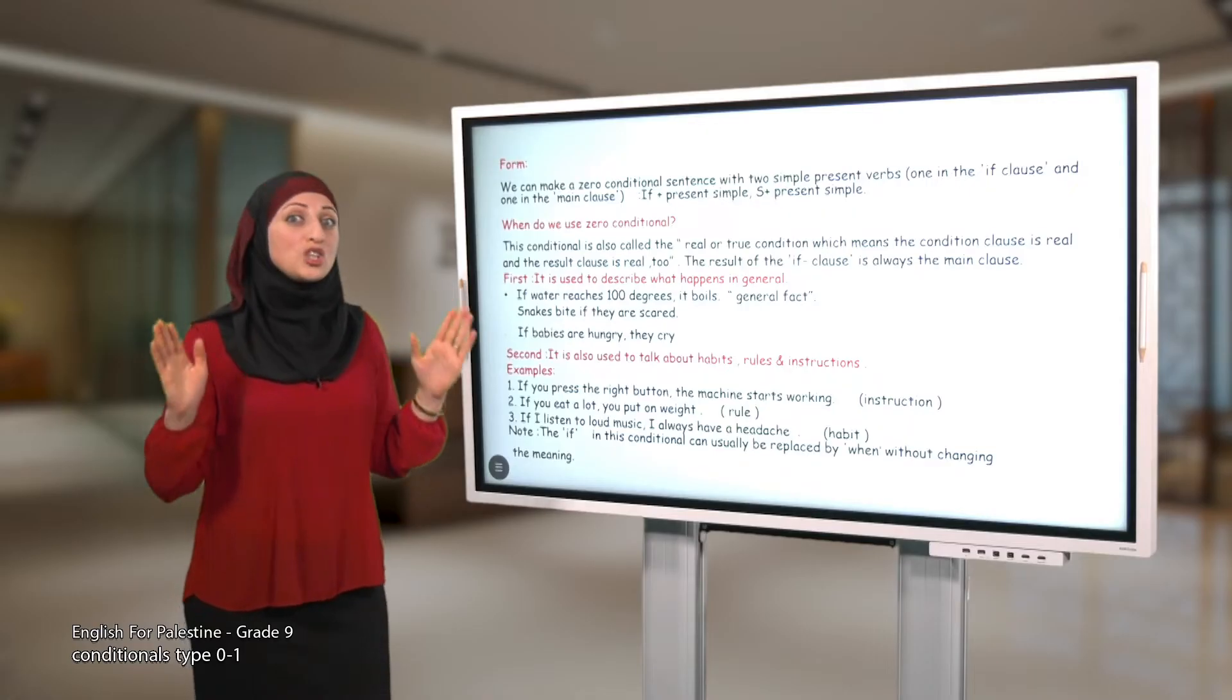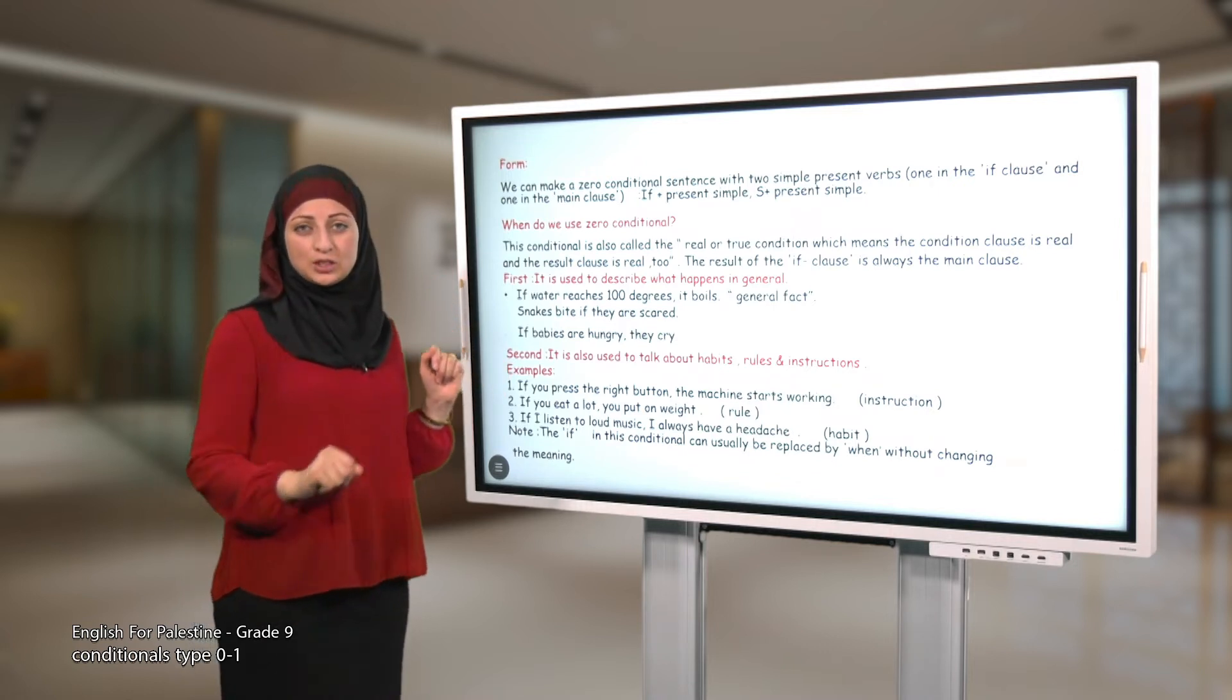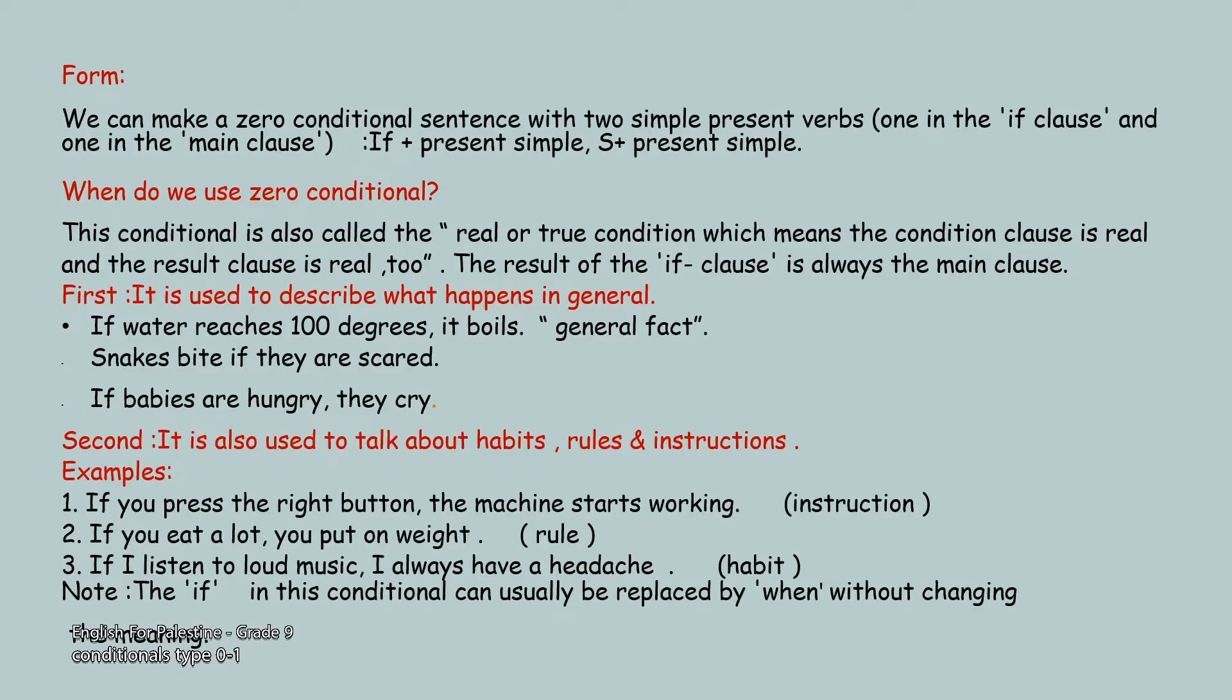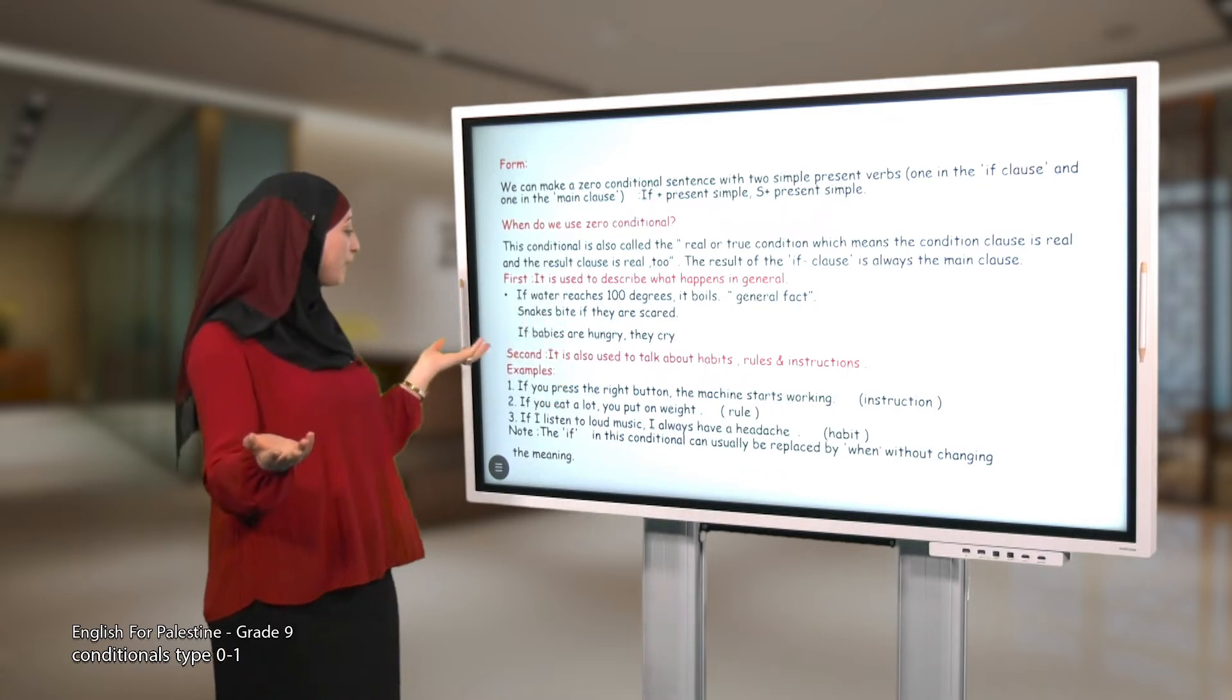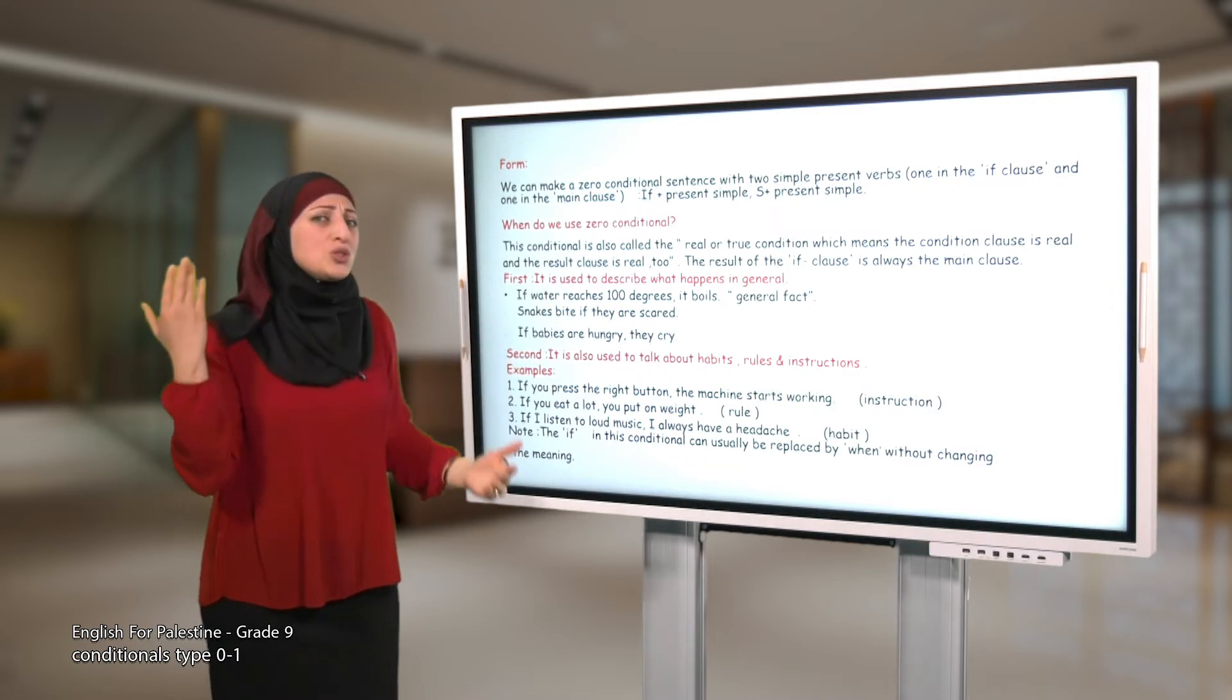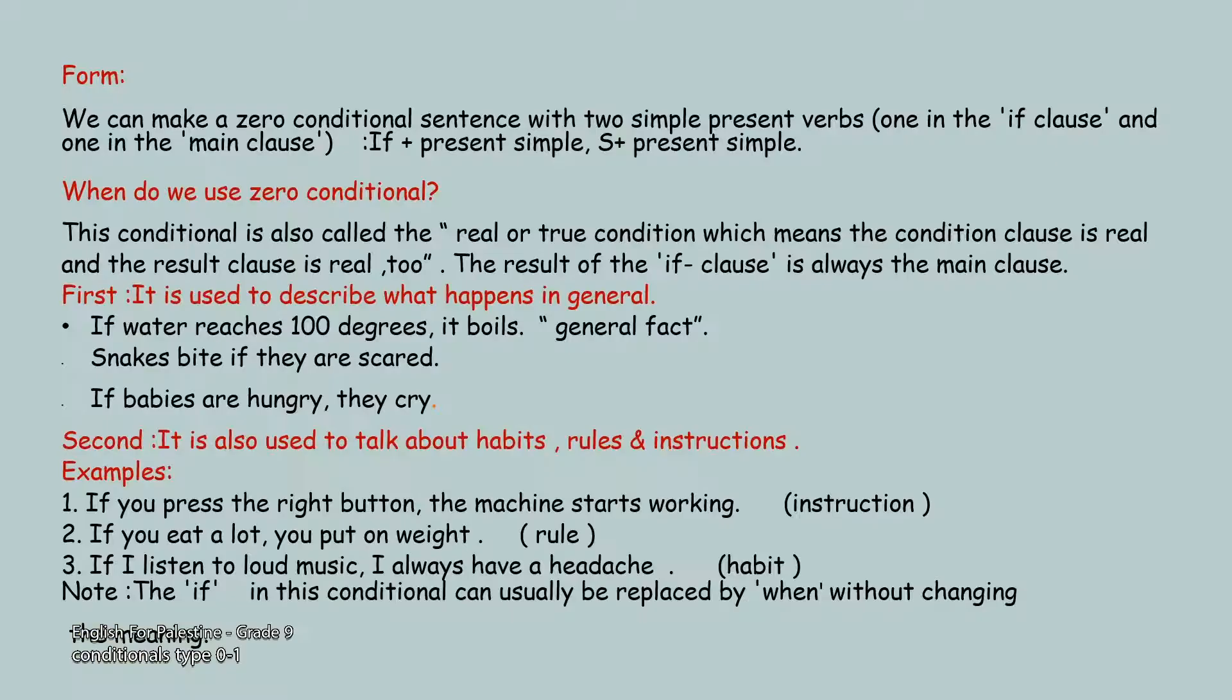Question number one: when do we use zero conditional? We use it to talk about real conditions. So we use zero conditional to describe what happens in general. How is that? There's an example here: If water reaches 100 degrees, it boils. It's a scientific fact, it's a general fact. Number two: when we talk about habits, rules, instructions. Like what? If you press the right button, the machine starts working - this is an instruction for you.